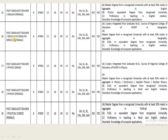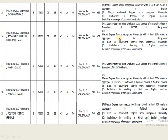The next post is Post Graduate Teacher for Geography in English medium, female category. The pay band is 47,600, with a minimum age of 18 and maximum age of 45. The qualification requires either a two-year integrated Post Graduate MSc course or a Master's degree in Geography along with BEd.